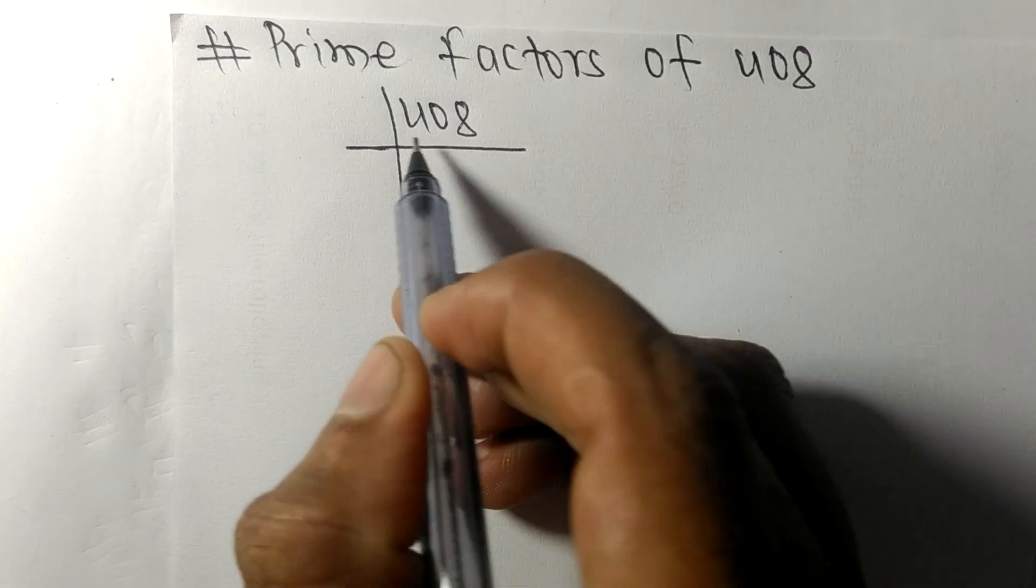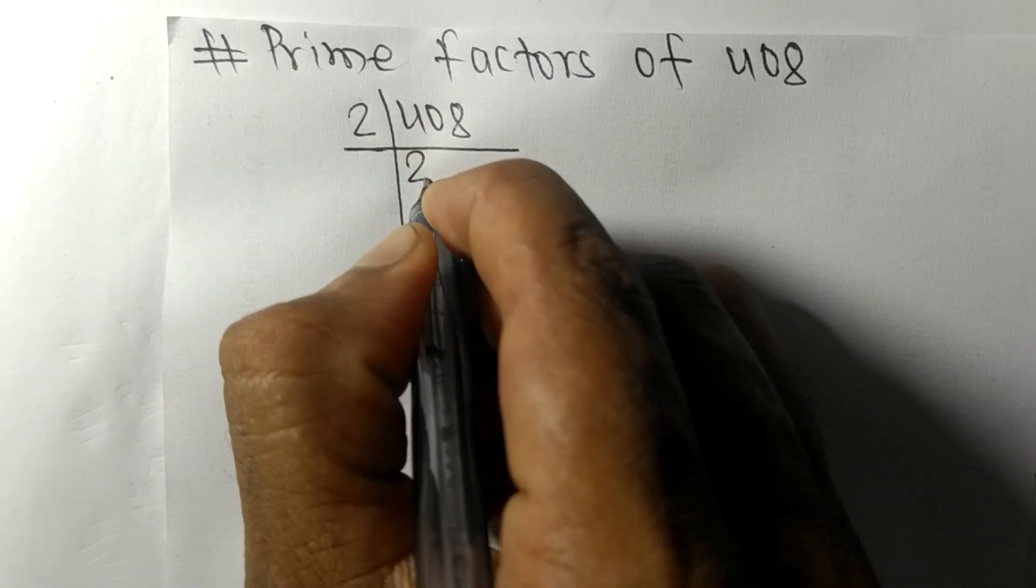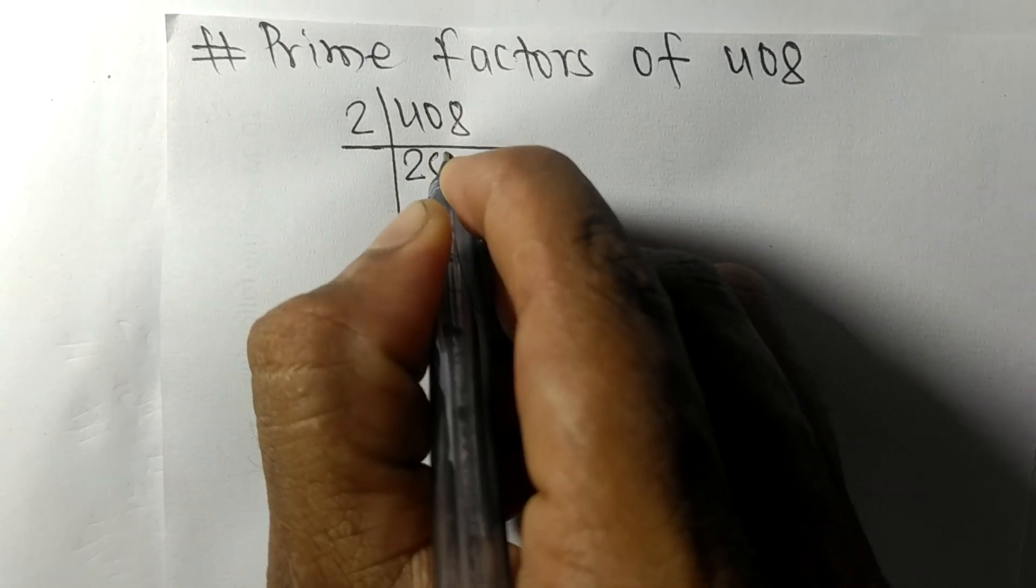2 times 2 means 4, 2 times 0 means 0, 2 times 4 means 8. Again it has even number 4 so it is divisible by 2.